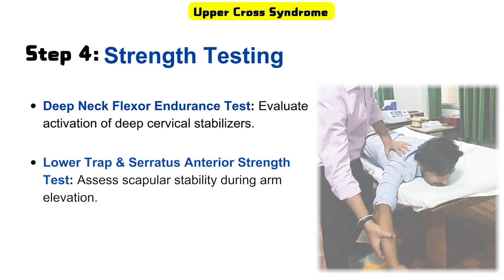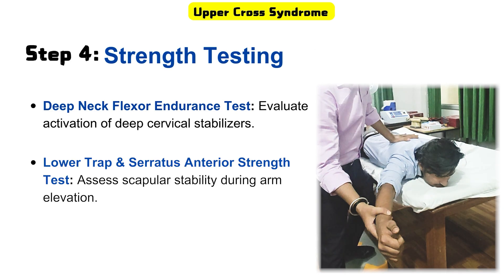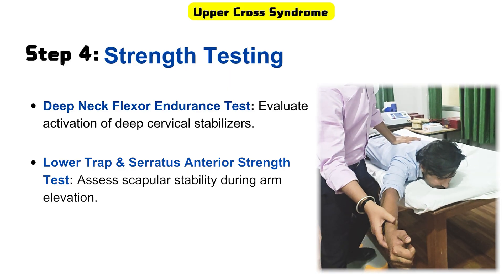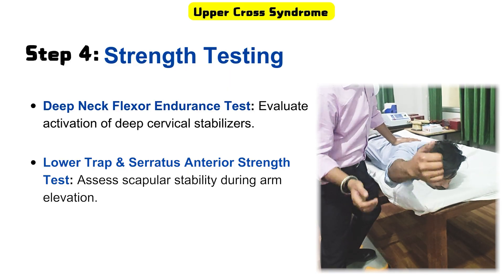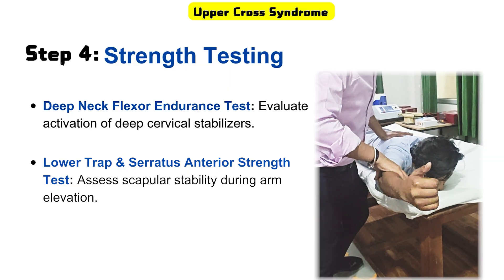Next is strength testing for the lower trapezius and serratus anterior. In this test, we assess scapular stability during arm elevation. The patient is asked to elevate the arm in the prone position and hold it against slight resistance. Inability to raise and hold the arm signifies a positive test for upper crossed syndrome.